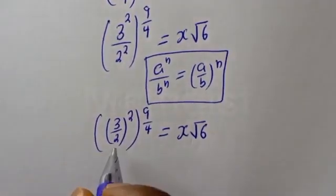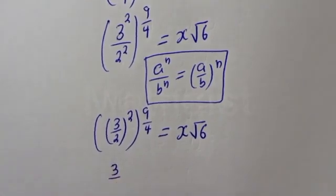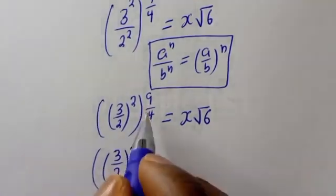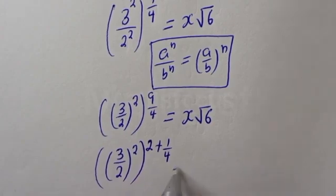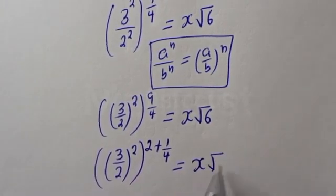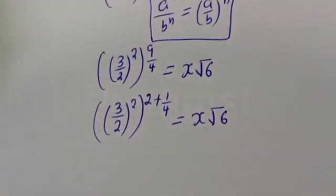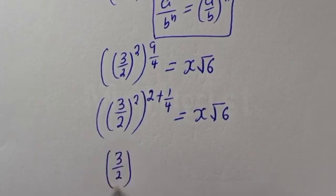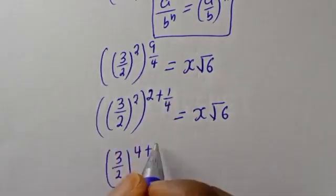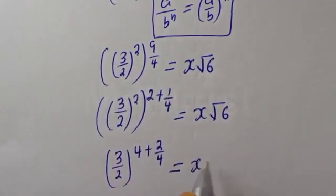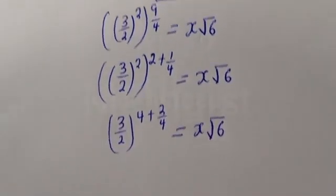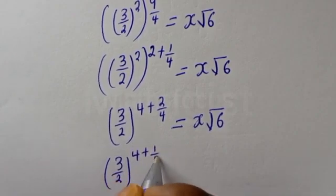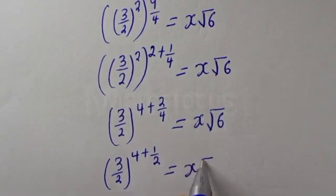Then this is 3 over 2 to the power of 2 times 9 over 4. We can write 9 over 4 as 2 plus 1 over 4, so the exponent becomes 2 times (2 plus 1 over 4), which gives 4 plus 1 over 2. So we have 3 over 2 to the power of 4 plus 1 over 2, is equal to s root 6.